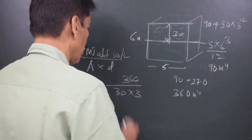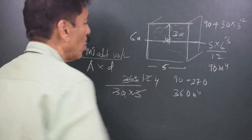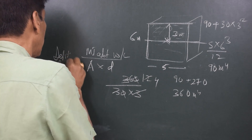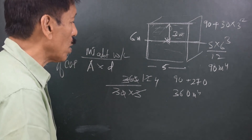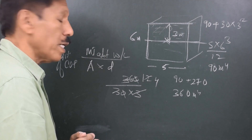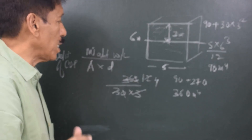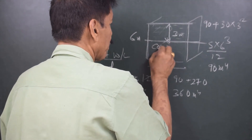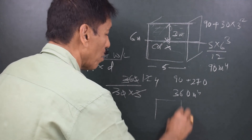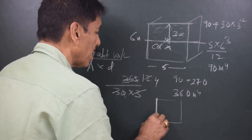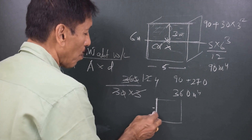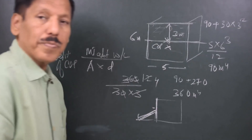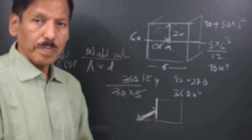So the depth of the center of pressure below the water level is given by: moment of inertia about the water level divided by (A × D) = 360 / (30 × 3) = 4 meters below the water level. This means that if you have a water head on one side and want to support this bulkhead, you will not support it halfway — you will support it at a position one third above the base. That is the position of the center of pressure.